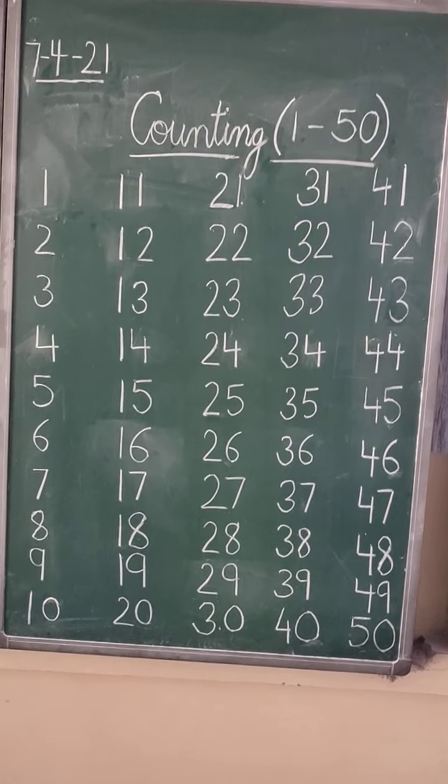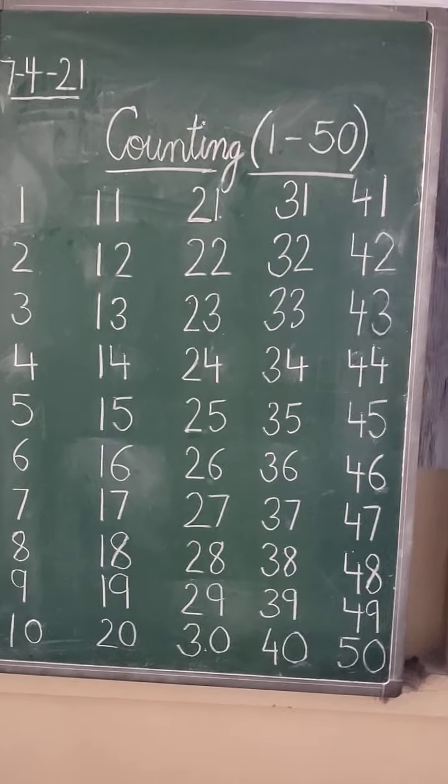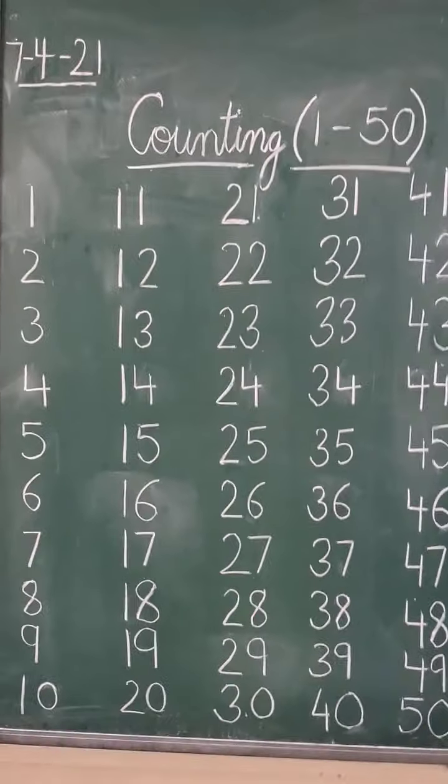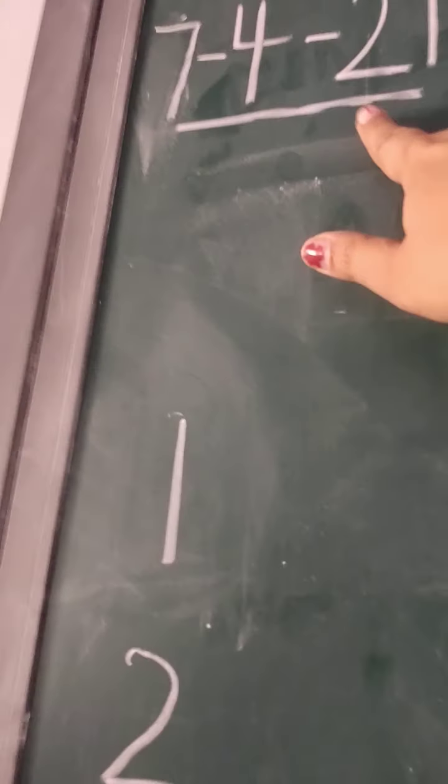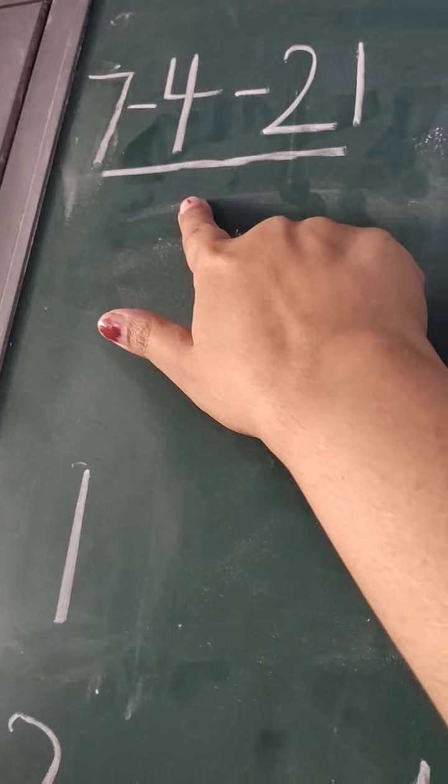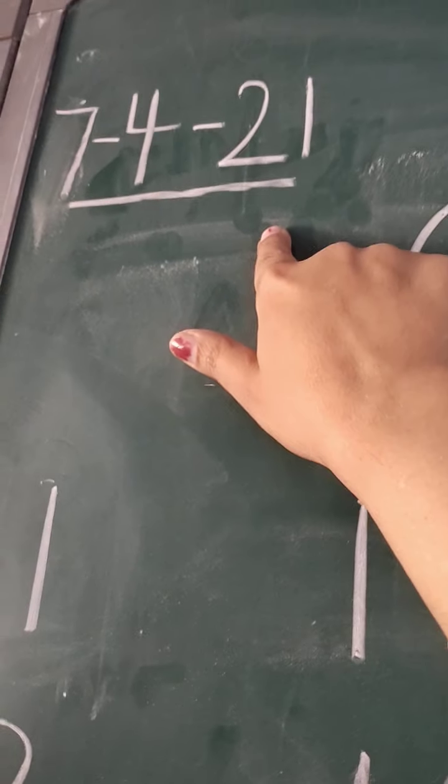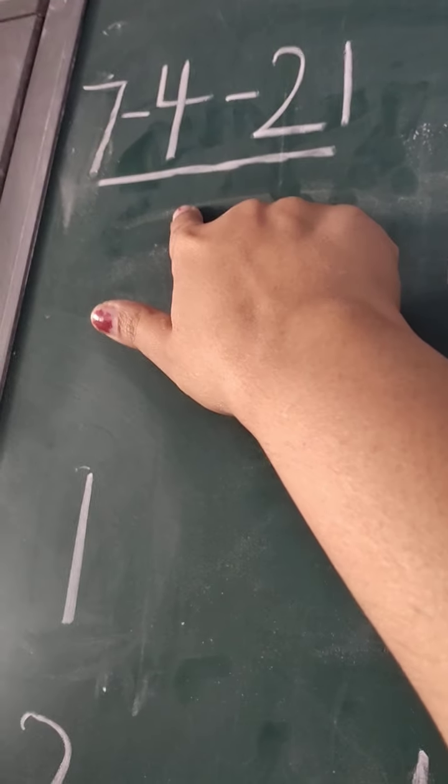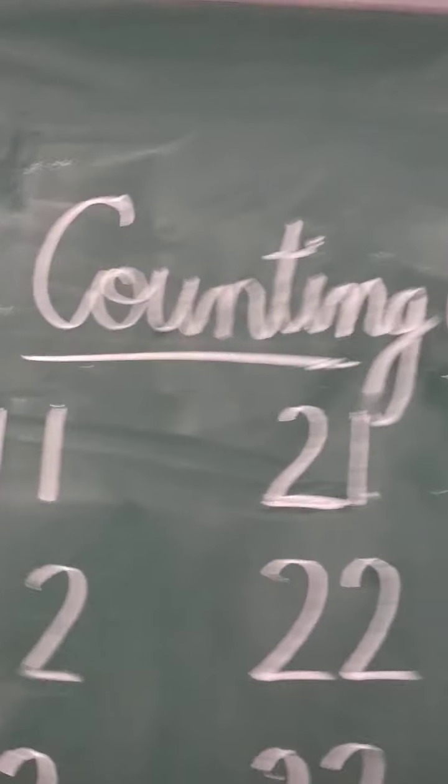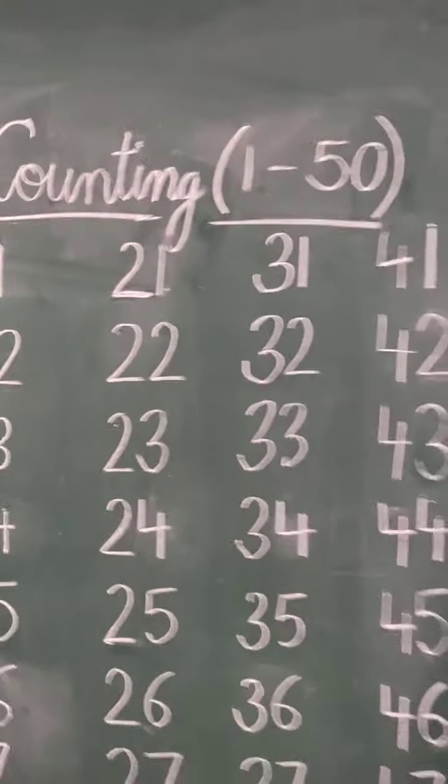Students, I hope you're ready with your notebooks, so start writing. Open your first page of the notebook. On the left corner, write today's date, which is 7th April 2021. The fourth month of the year is April, right? Today.